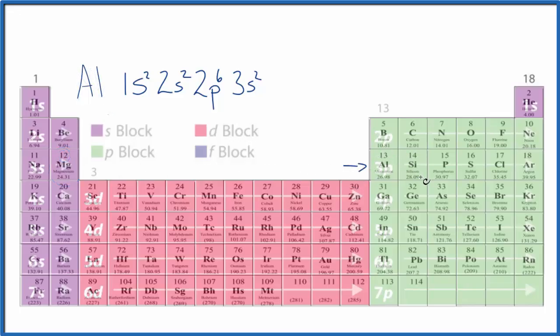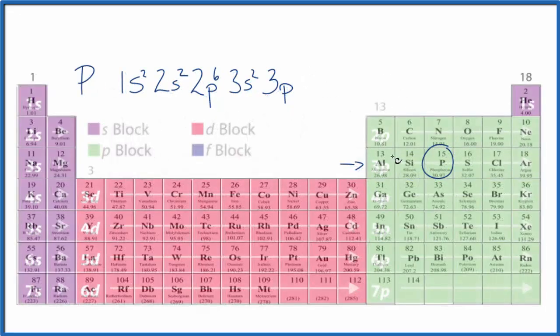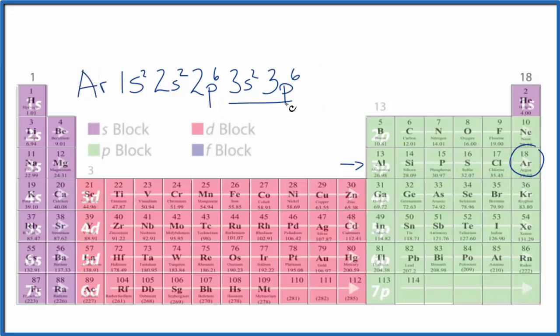We go over here to aluminum. We're back in the p block again in the third period. So we have 3p, since we're in the first part of that p group here, 3p1. And if you add these numbers up, they equal 13. Next, we go to silicon, and we're in p2. For phosphorus, 3p3. Sulfur, we have 3p4. Chlorine, 3p5. And for argon, we fill this energy level up with 8 electrons. We have 3p6. Argon, this energy level is full. That makes it a noble gas.